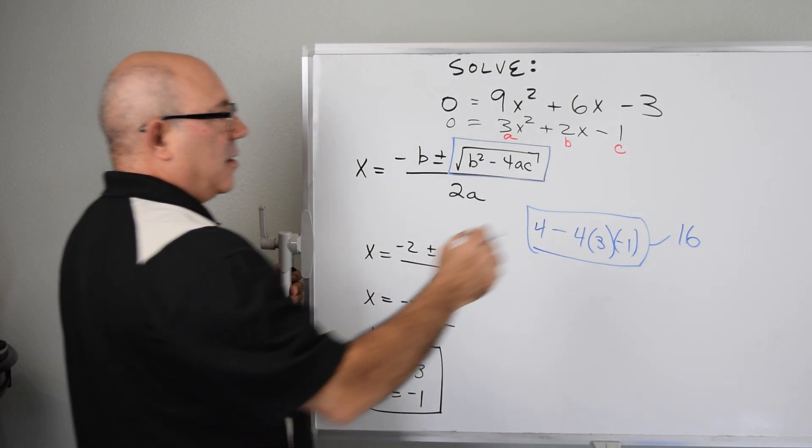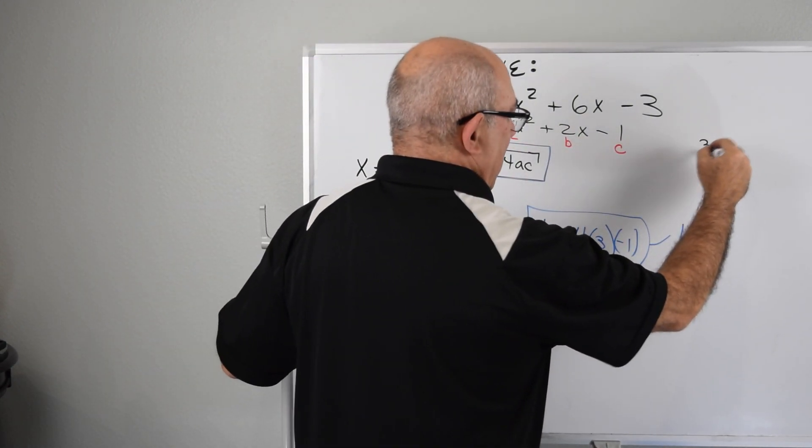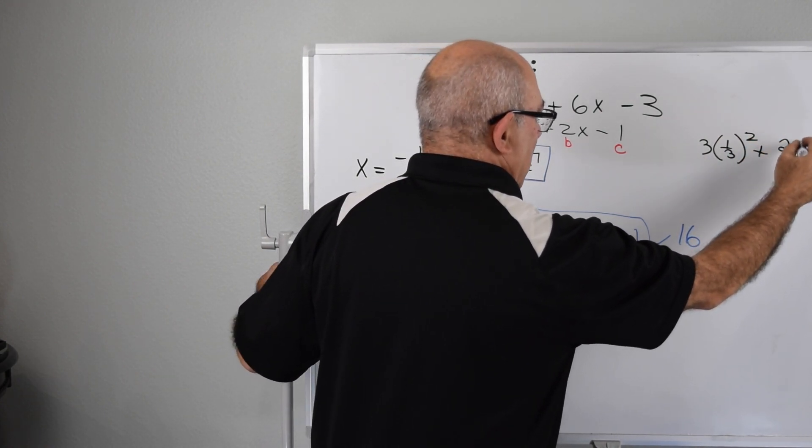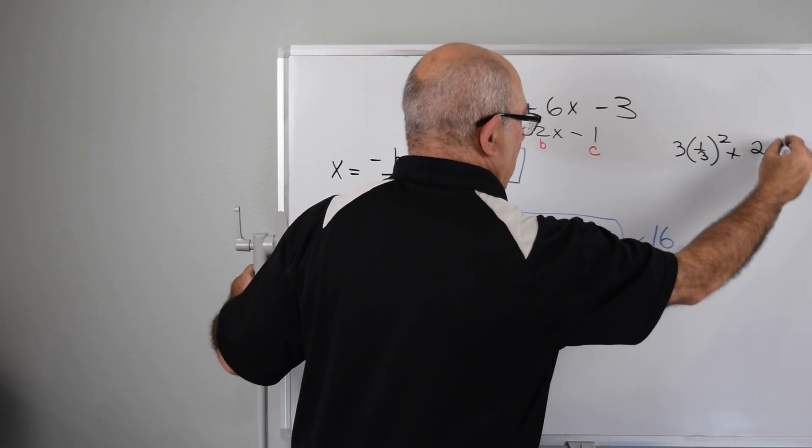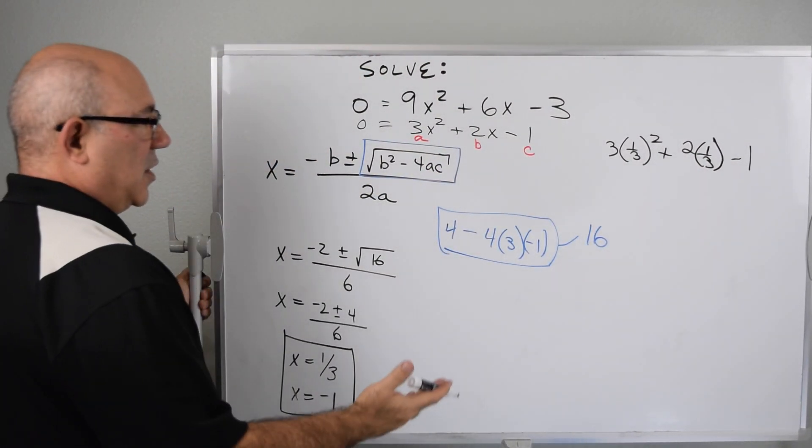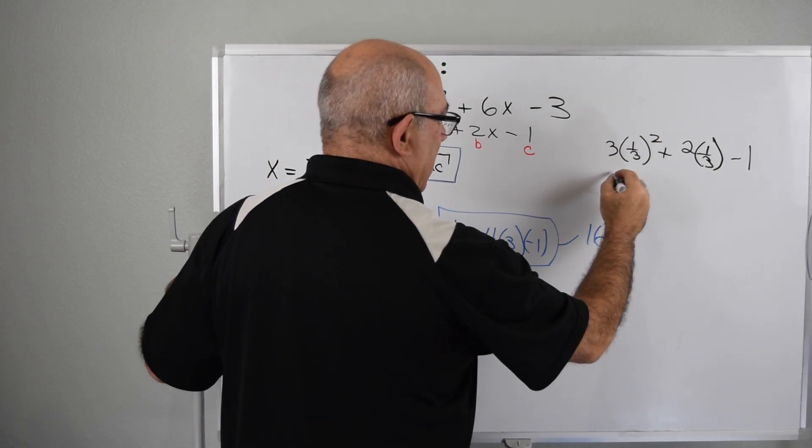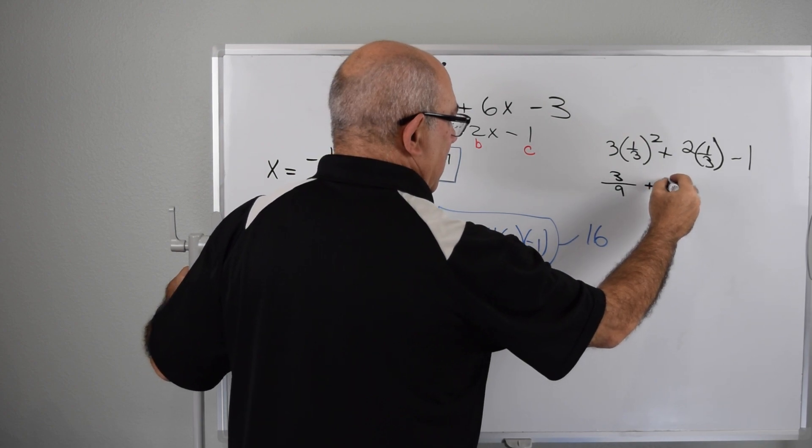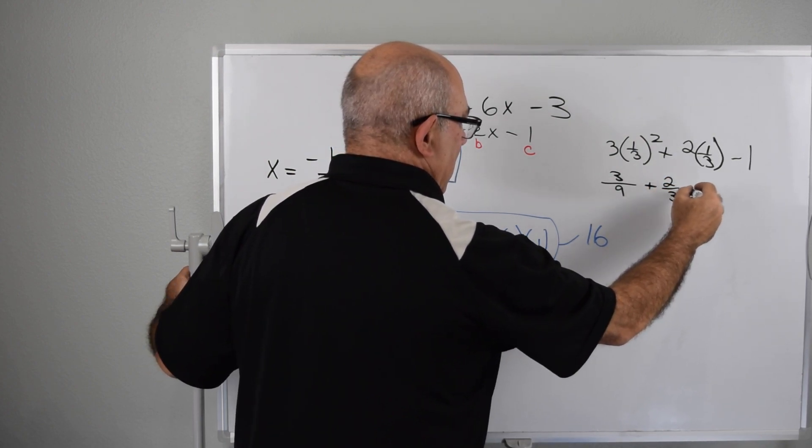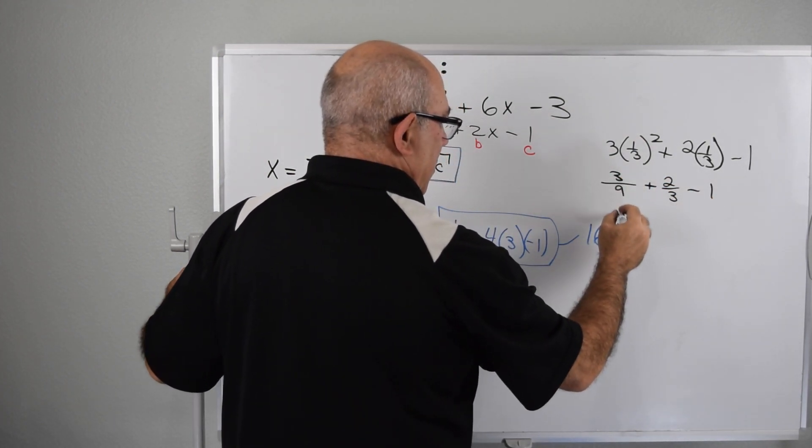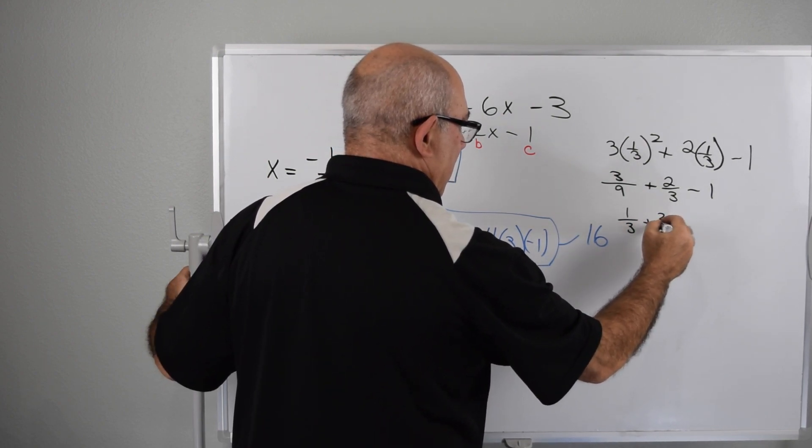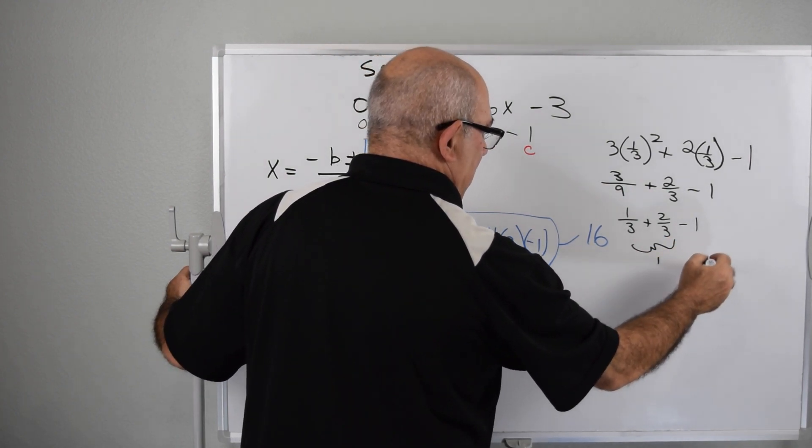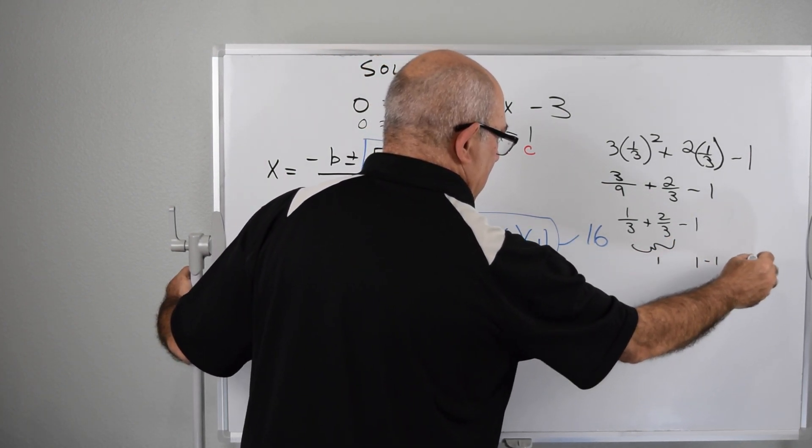The 1 third might be a little harder. Let's plug that in. We have 3 times 1 third squared plus 2 times 1 third minus 1. So let's figure out what that is. That's 3 over 9 plus 2 thirds minus 1. This is 1 third. 1 third plus 2 thirds minus 1. This equals 1. 1 minus 1 equals 0. Check.